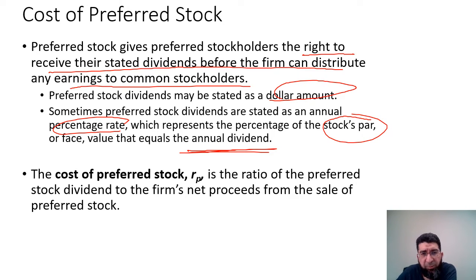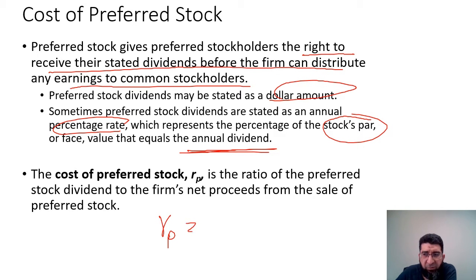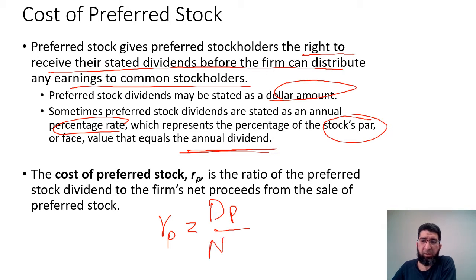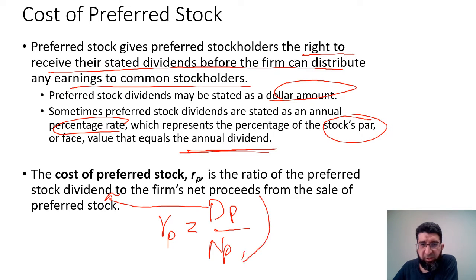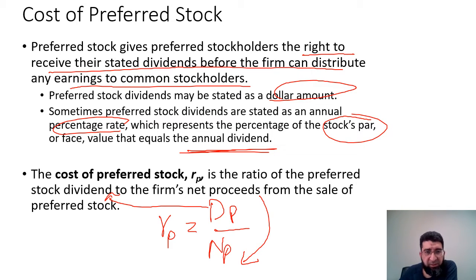The cost of preferred stock is the ratio of the preferred stock dividend to the firm's net proceeds from the sale of preferred stocks. Algebraically we write it as DP over NP, where DP is the stock dividend, NP is the net proceeds received from the sale of preferred stock, and RP is the cost of preferred stock.